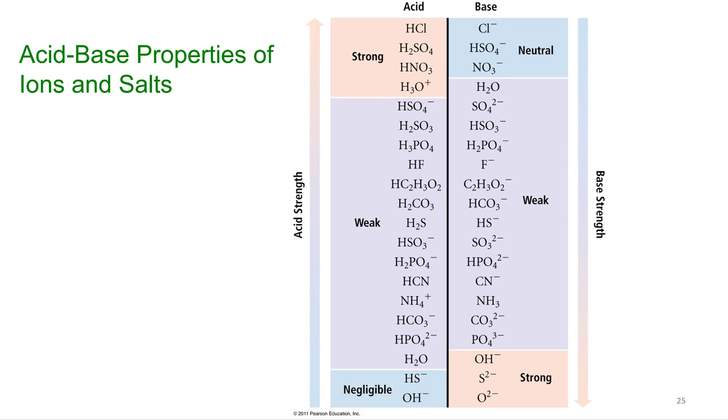Everything in the middle, if you're a weak acid, your conjugate is going to be weak as well. So, it's going to have both acidic and basic properties. Now, here we don't really worry about the sulfide or oxide ions. We just worry about the hydroxide. So, really, the only thing we really have to worry about is the conjugate bases of our strong acids.